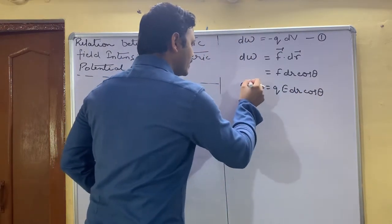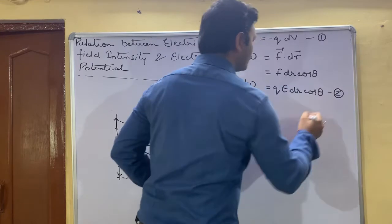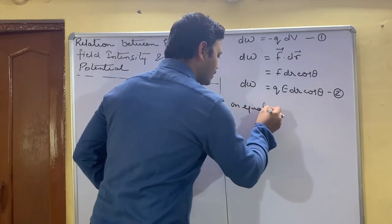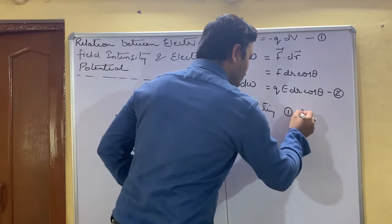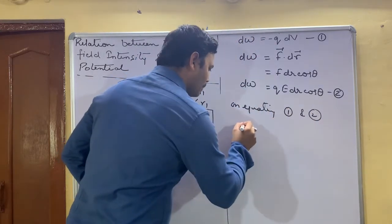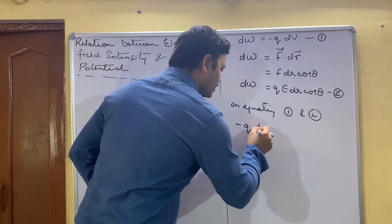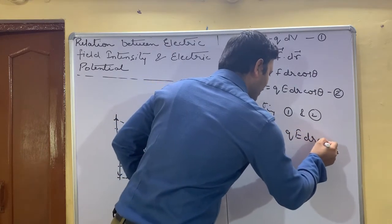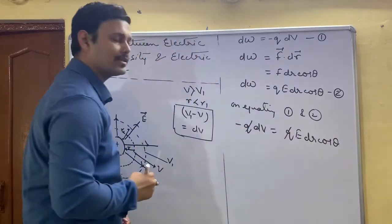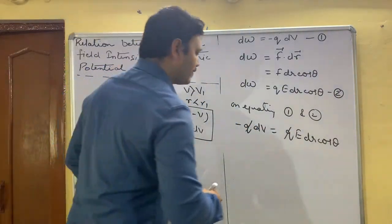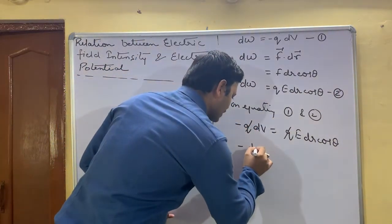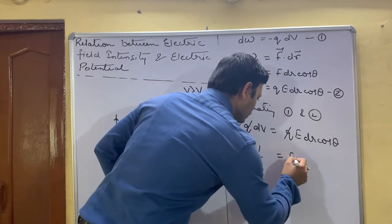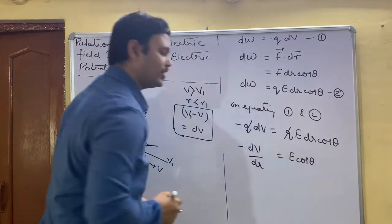So we got equation number 1, we got equation number 2. On equating 1 and 2, we will get minus Q dV is equals to Q E dr cos theta. This Q will get cancelled out and we will be left with only minus dV upon dr equals to E cos theta.